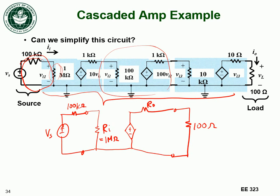The output resistance follows the same argument. My load is connected only to the output of the third stage; the other circuits aren't connected to it. So the load only sees the output resistance of the third stage. Therefore, this new model has an output resistance equal to the output resistance of the third stage.